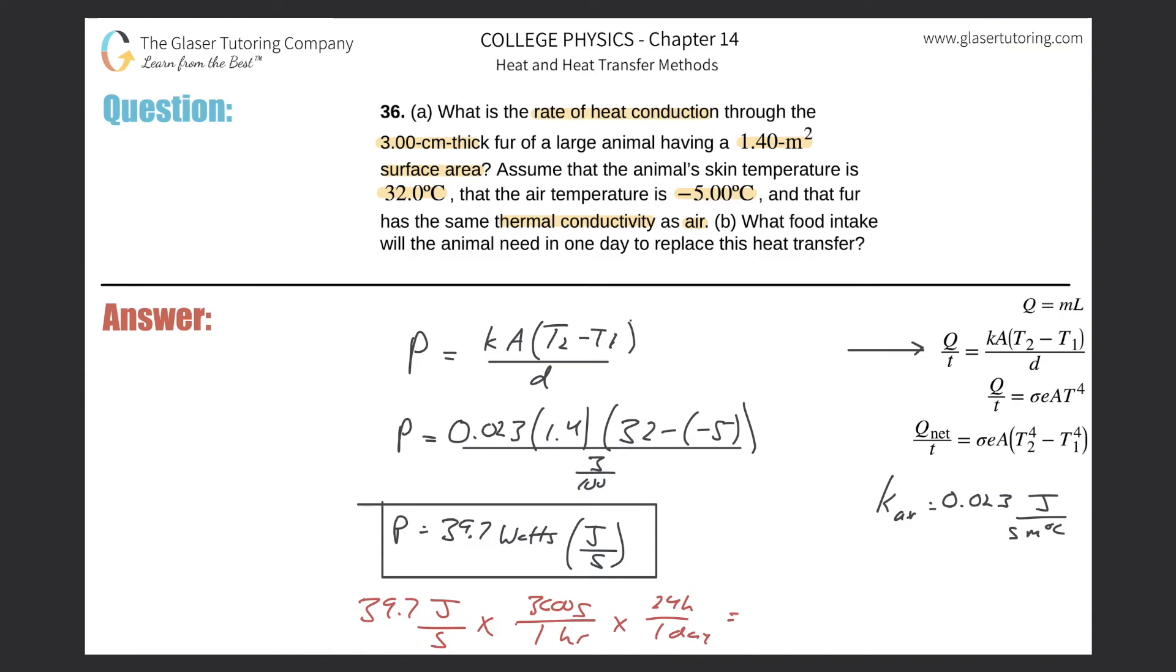So 39.7 times 3,600 times 24, and voila, it's about 3.43 times 10 raised to the 5, and that's in joules. Joules per day is fine, that works, and there you go, fairly straightforward.